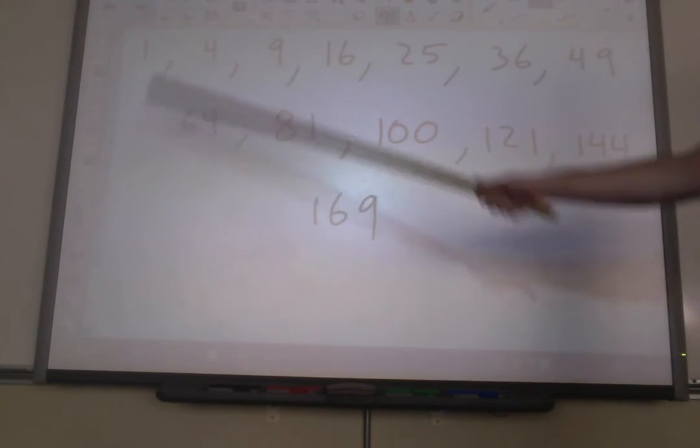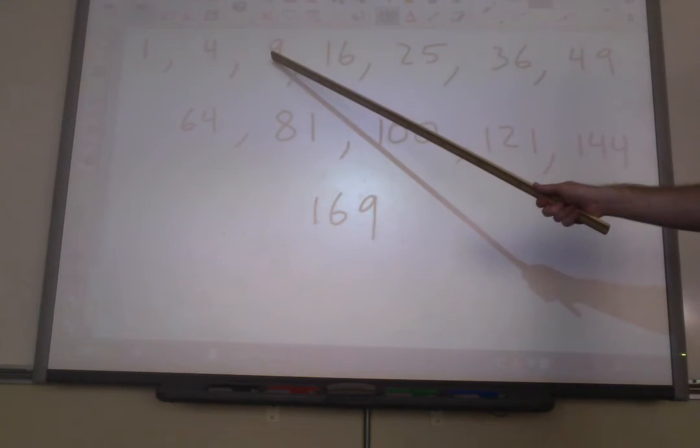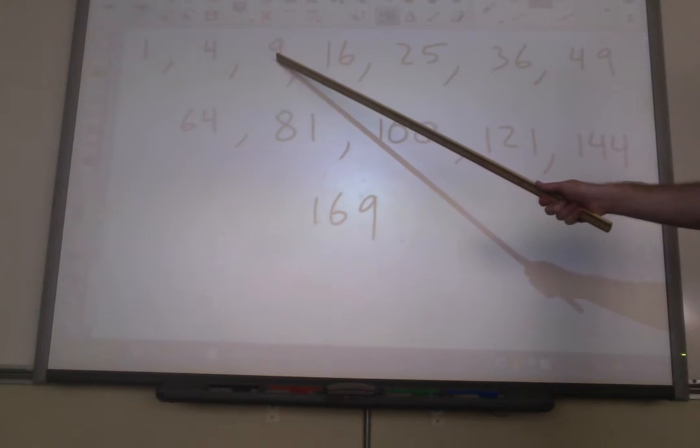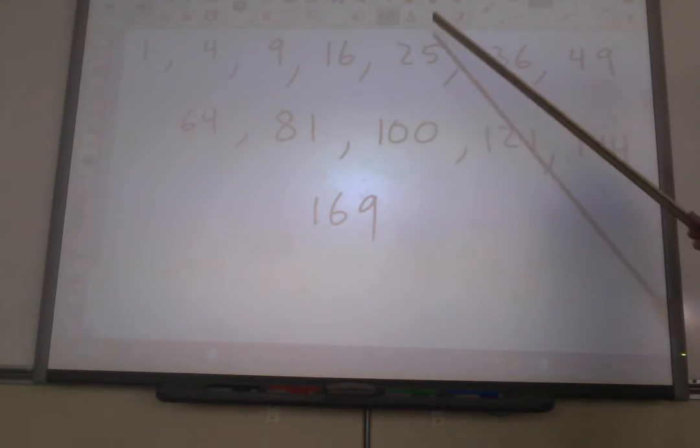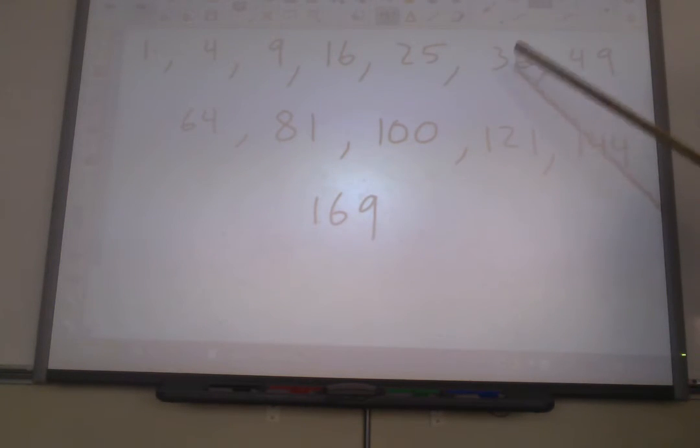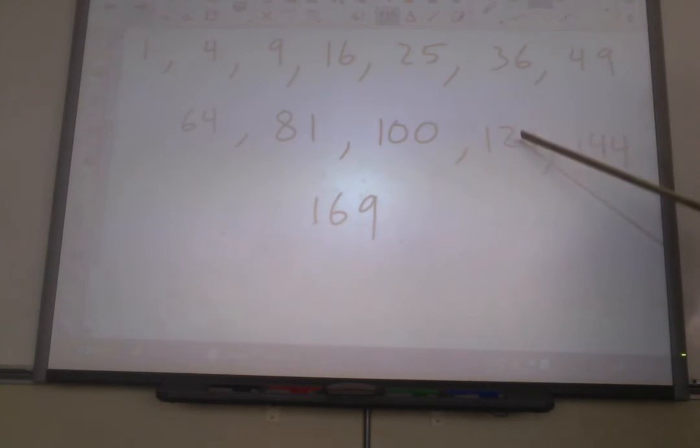The second perfect square is 4. Why is that? Because 2 times 2 equals 4. The third one is 9, because 3 times 3 equals 9. The fourth one is 16, because 4 times 4 equals 16. 5 times 5 is 25. 6 times 6 is 36. 7 times 7. 8 times 8. 9 times 9. 10 times 10. 11 times 11. 12 times 12. And 13 times 13.